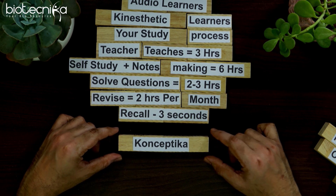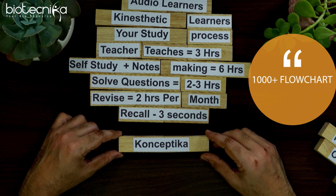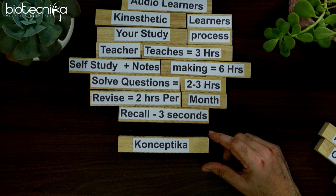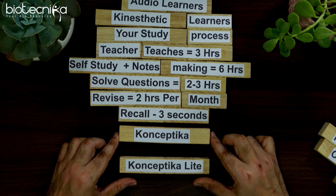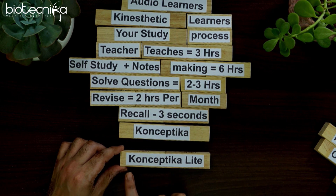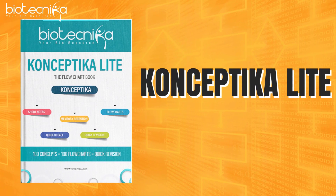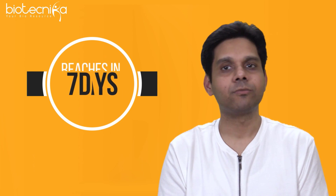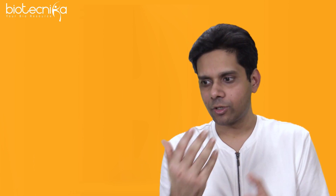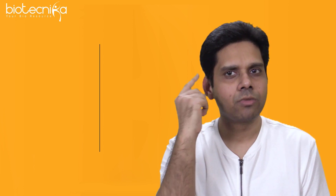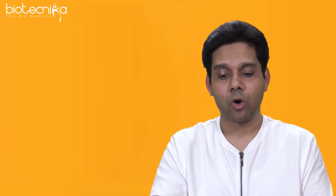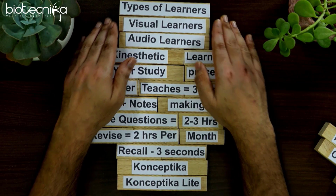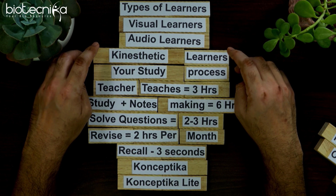What happened with Conceptica is it is a huge volume — a thousand plus flowcharts — and it became very difficult for people to revise through a thousand flowcharts. So we came out with a lighter version called Conceptica Lite, launched in 2020. It contains 100 hardcopy flowcharts, available in the Biotechnica store. You can order your copy and it reaches you in seven days. Before the exam, you take the flowcharts, go through them, visual memory gets refreshed, and you remember better. However, the problem remains with kinesthetic learners, who need more engagement and activity. In fact, most of us are a mixture of all three types.